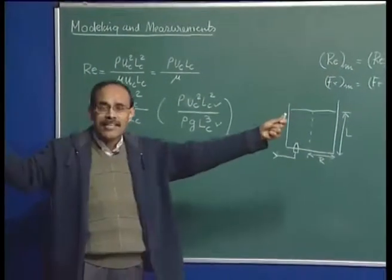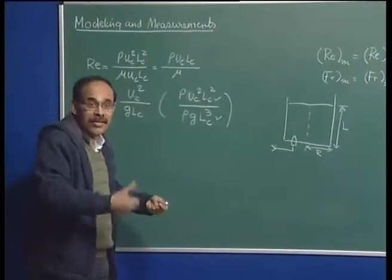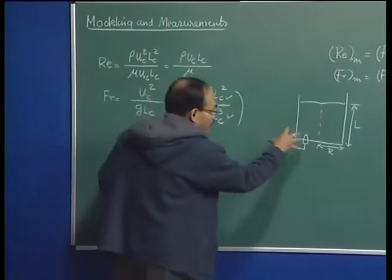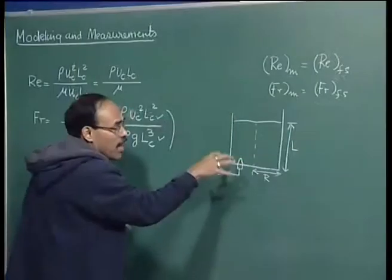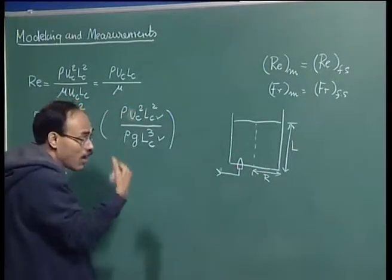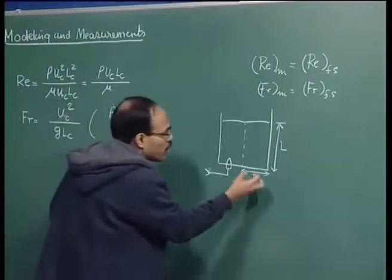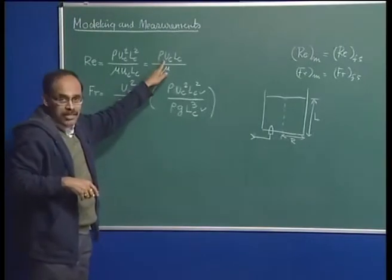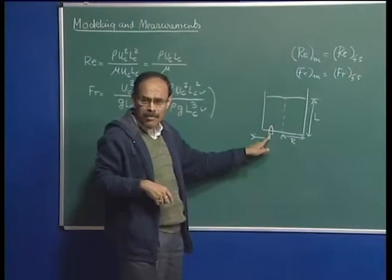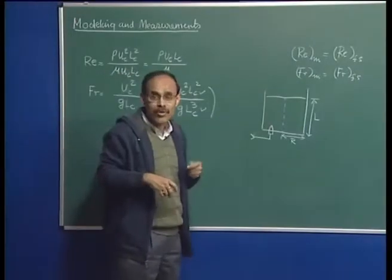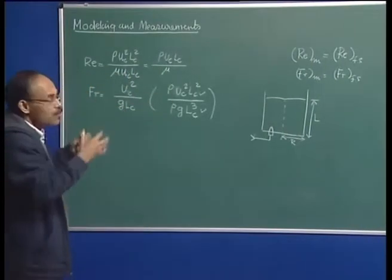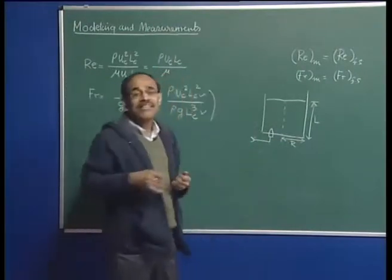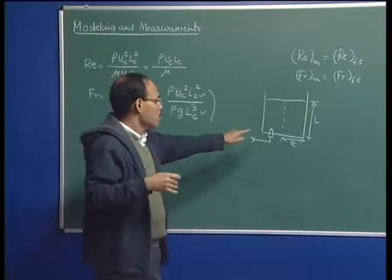For example, in a tundish, you may have three different length scales: length of the tundish, width of the tundish, and depth of liquid in the tundish. Of these, which one to consider is a key question. We must understand which is the more meaningful entity — the length scale or the radius of the vessel — for characteristic length. Similarly for characteristic velocity: is it the velocity through the orifice or some other velocity scale? Some thinking about the process is necessary before one can explicitly quantify the characteristic length and velocity, because there are multiple candidates in the system.